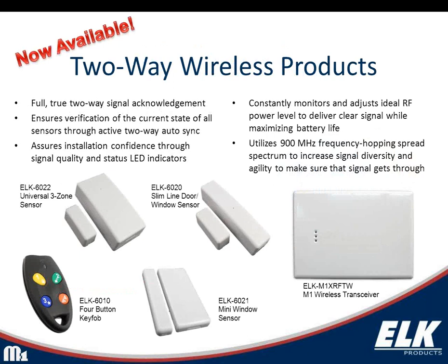Another brand new product from Elk is their two-way wireless product. The initial release includes a key fob, door/window sensor, mini window sensor, universal sensor, and a transceiver to connect to the M1. The nice thing about two-way communication is you get acknowledgement that the signal has been received - a transmitter isn't just blasting out signals hoping they reach the receiver. With this technology, we know the signal got there because it's been acknowledged, which also saves battery life.